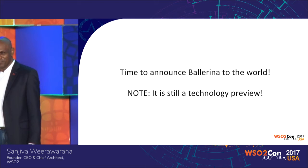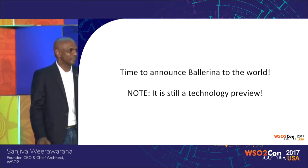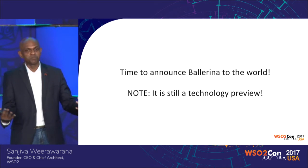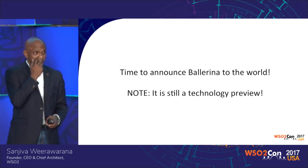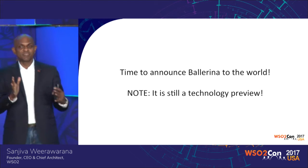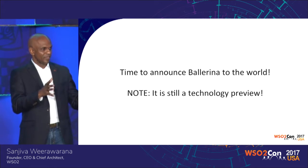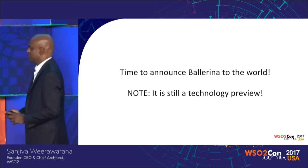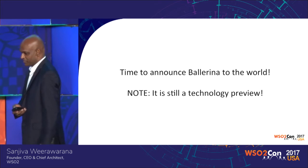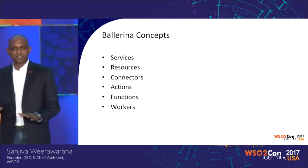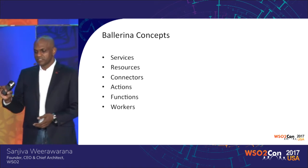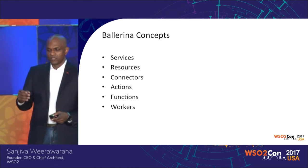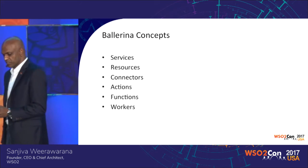By the way, this is still a technology preview, so I had to re-emphasize that. There are many things that are not done yet. There's a bunch of things we are still working on and a bunch of things we want to get your input on. That's why we are putting it out as an early-stage technology preview. The official version number is 0.8, but there are many, many things that we know can be improved. I'm sure there are other things we haven't thought about that you guys can tell us. So please participate. Let me talk about the concepts of Ballerina. There are six key concepts: services, resources, connectors, actors, functions, and workers.